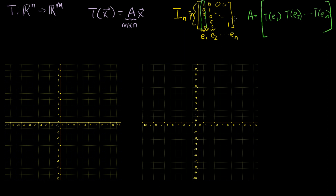All of this is review. Let's actually use this information to construct some interesting transformations. So let's start with some set in Rn — and actually everything I'm going to do is going to be in R2, but you can extend a lot of this into general dimensions. We're dealing with R2 right here, which is only two dimensions.